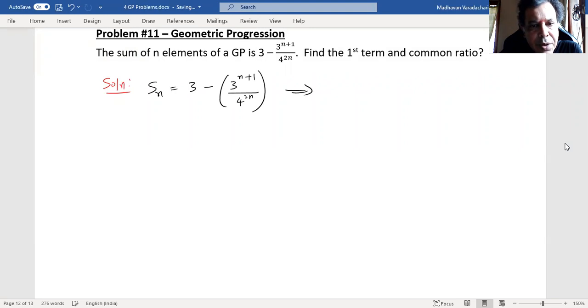If I substitute n for 1, I will get the sum of terms up to the first term, which is nothing but the first term. So 3 minus 3 to the power of 1 plus 1 divided by 4 to the power of 2 into 1, which is 2 only.